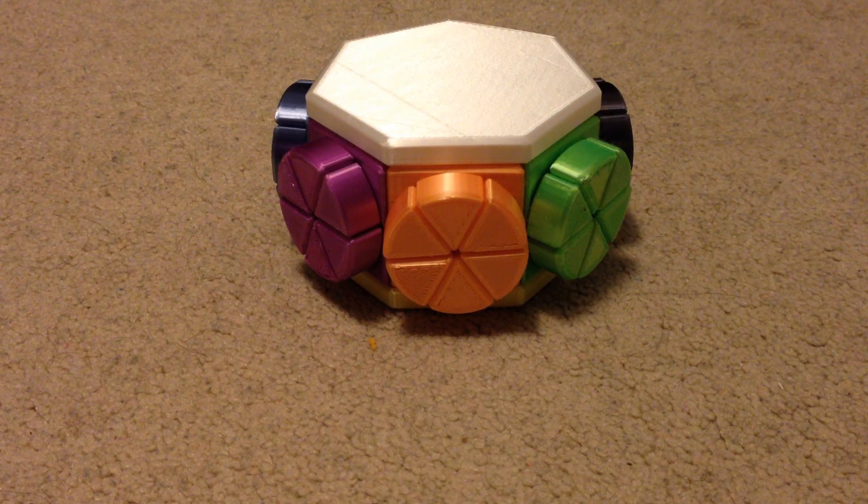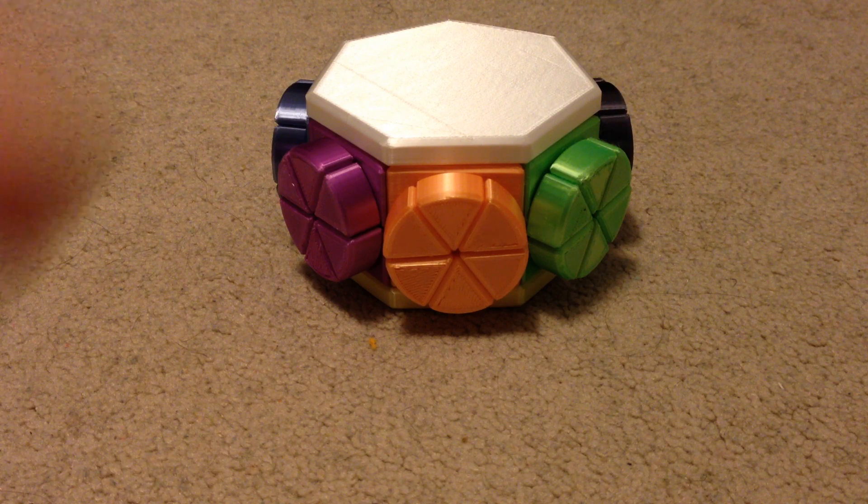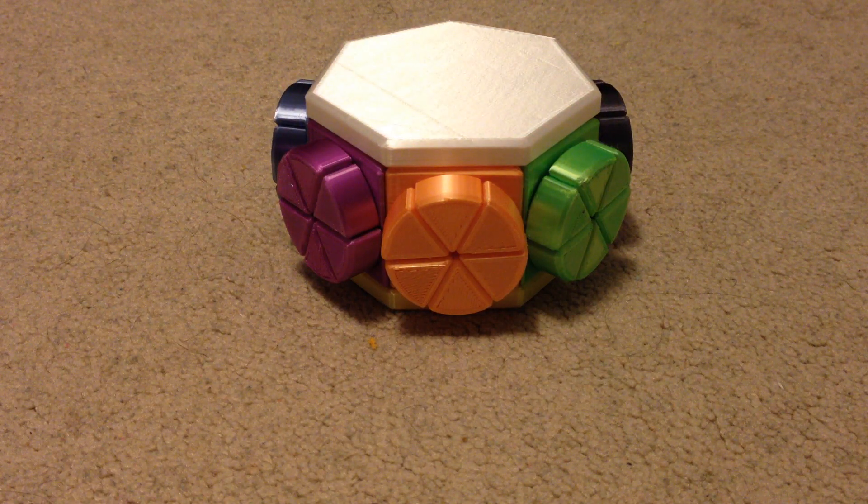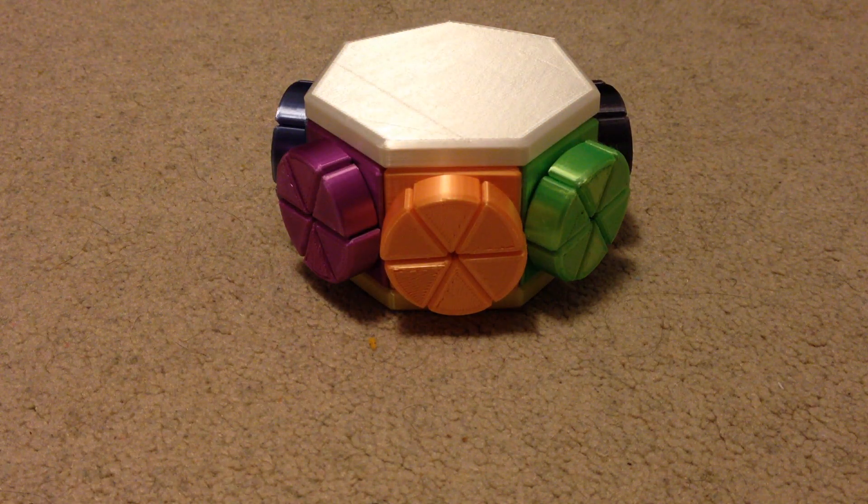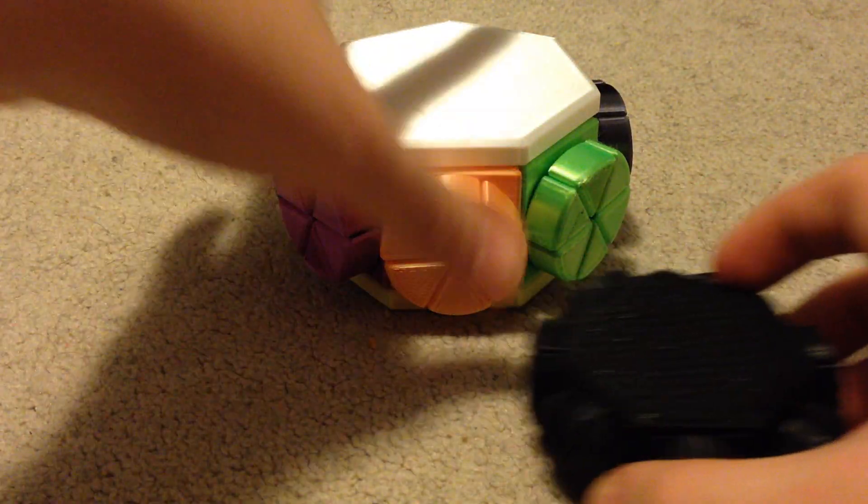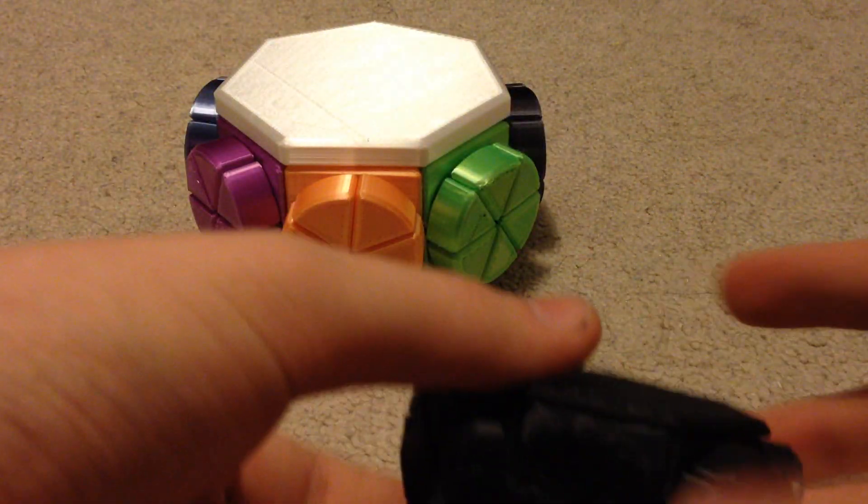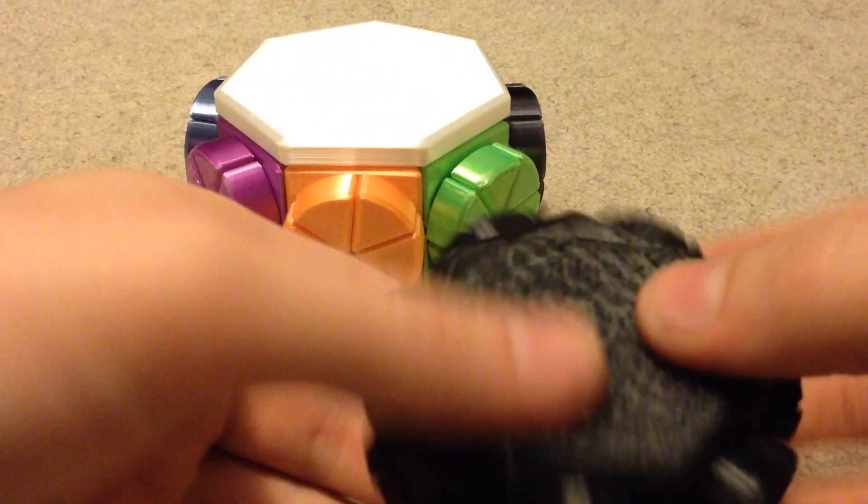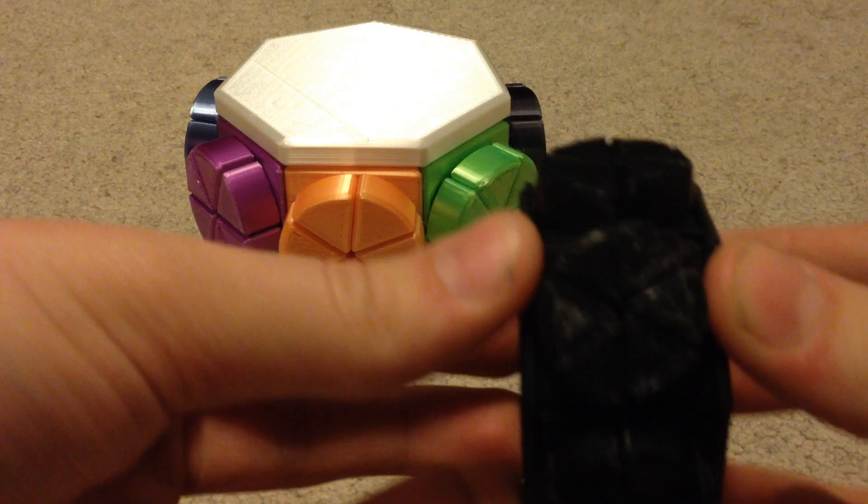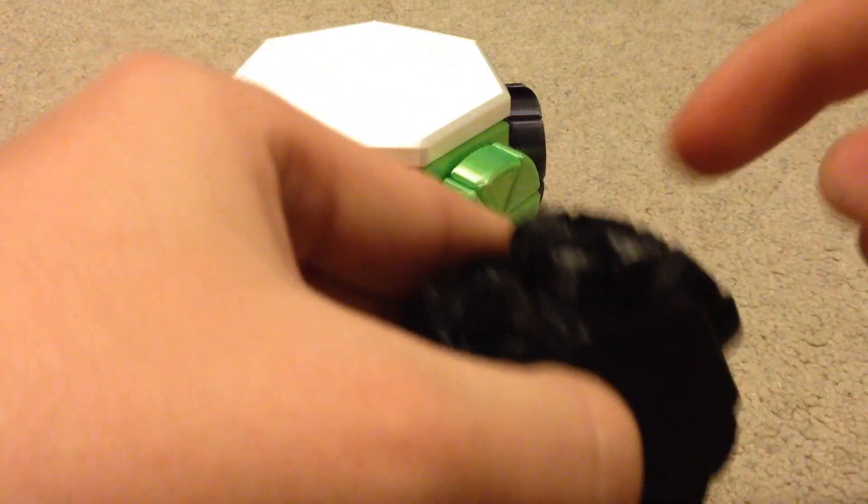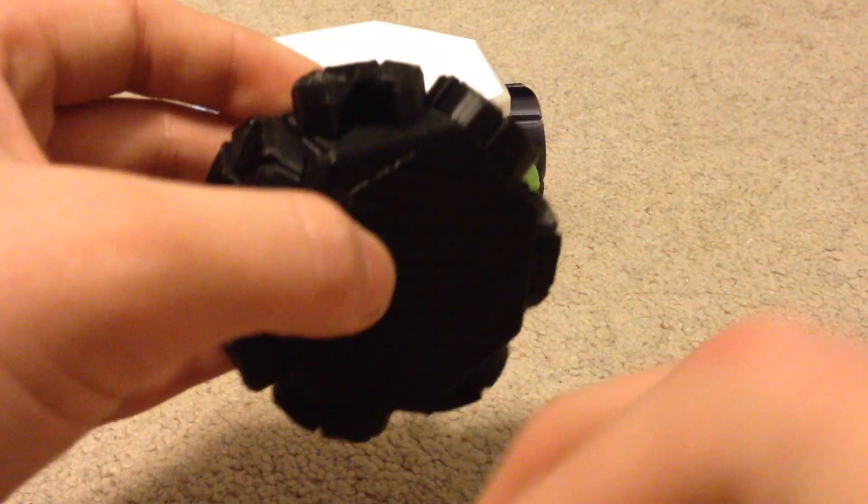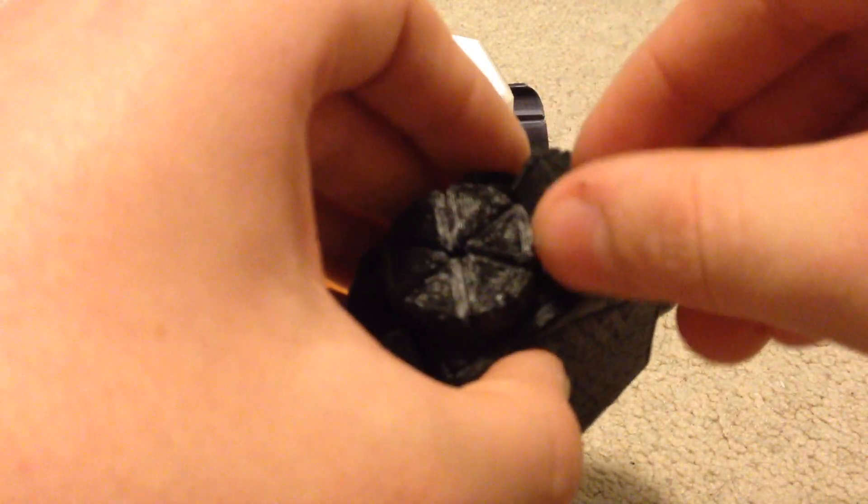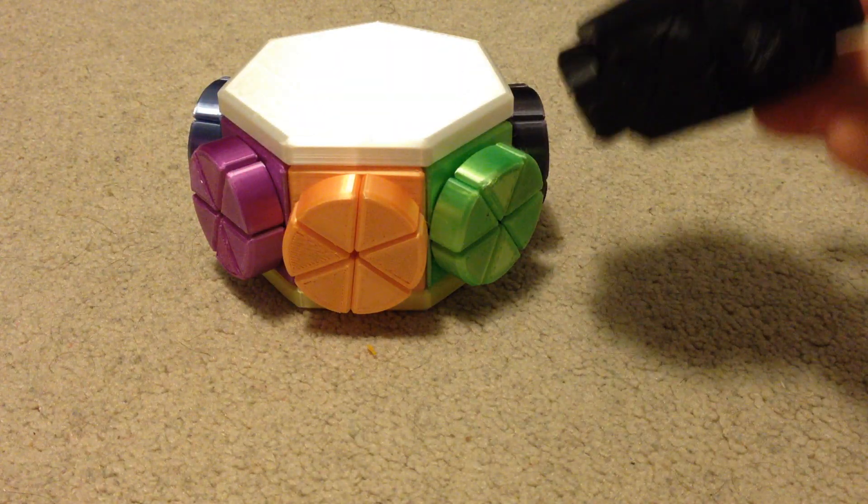So I have a couple of other prototypes of this puzzle. The first one, this is the third prototype. The first prototype looks like this. It is smaller and completely black. It works okay, but the wheels are super unstable. Like, these pieces come out pretty easily. But the pieces are essentially the same.